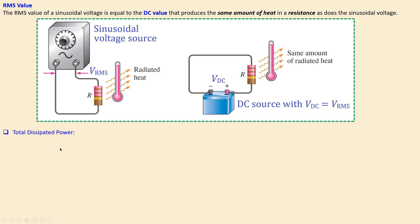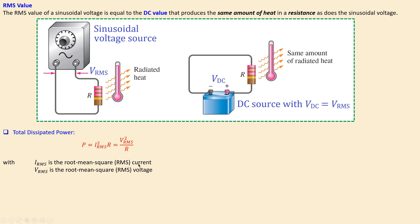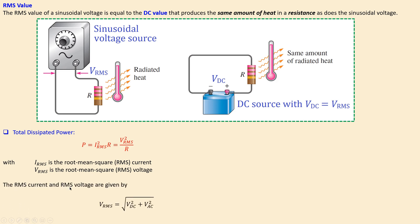The total dissipated power is given by P = I²R or V²/R, but using the RMS values of current or voltage. The RMS current and RMS voltage are found by squaring the DC part and each AC part separately, summing them, and then taking the square root. The same expression applies for both RMS current and RMS voltage.